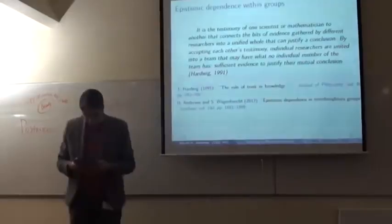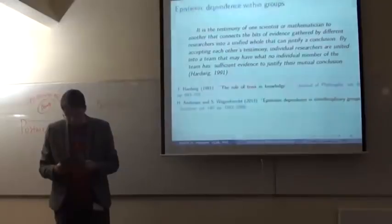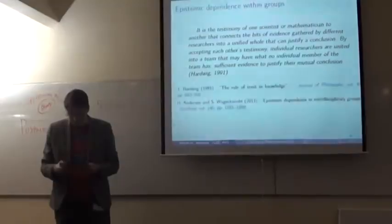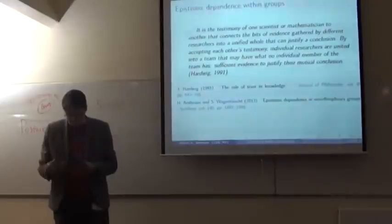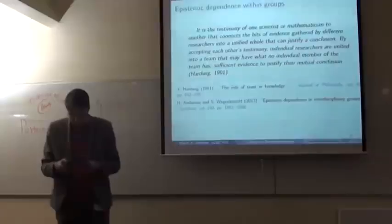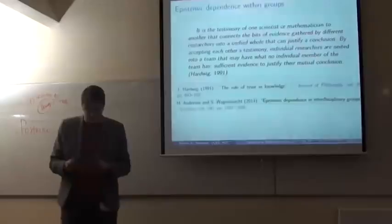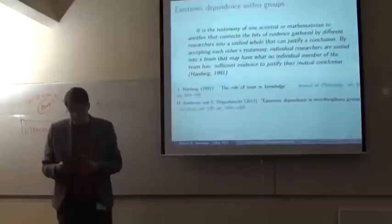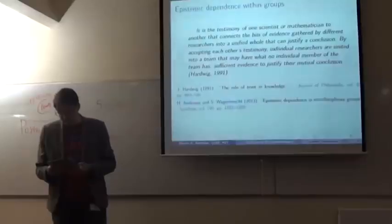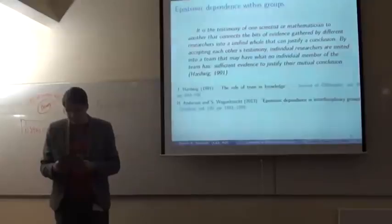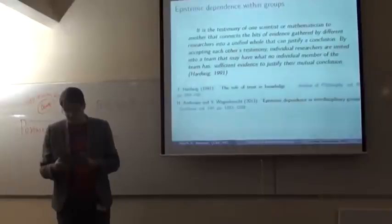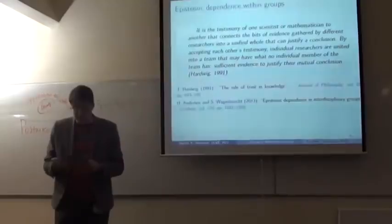In a recent paper, my colleagues Hannah Andersen and Susan Wagenknecht have discussed the epistemic dependence within interdisciplinary groups. Their focus has been on analyzing the potential tensions within research groups that span complementary background knowledge. As a starting point, they take the central elucidation of multilateral epistemic dependence offered by Hardwig. As you can see there, and I quote: It is the testimony of one scientist or mathematician to another that connects the bit of evidence gathered by different researchers into a unified whole that can justify a conclusion.